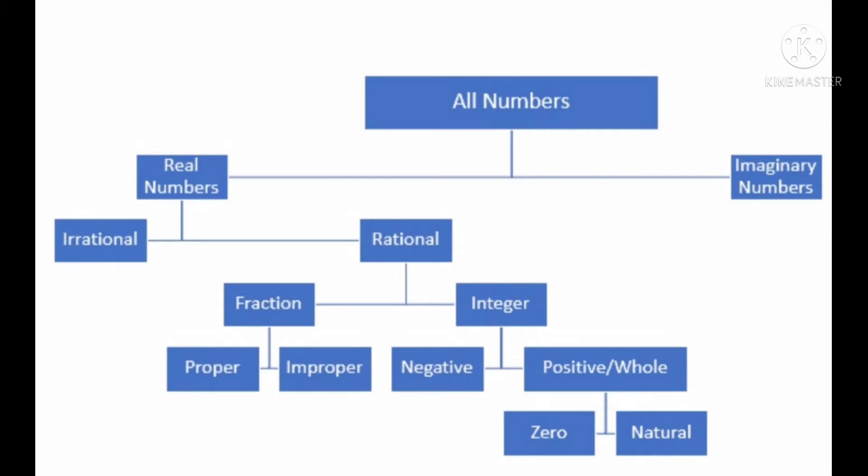Students, observe the picture. In this picture, all numbers are there. All numbers are divided into two ways: real numbers and imaginary numbers. Real numbers are divided into two ways: rational and irrational. Rational is divided into two ways: fraction and integer.